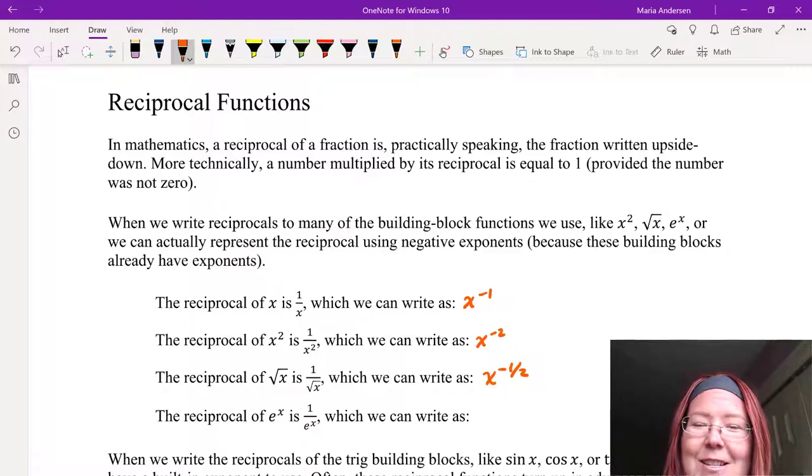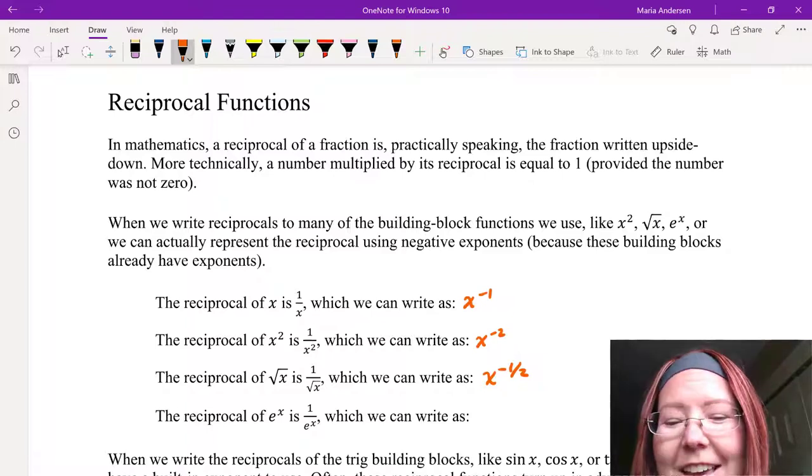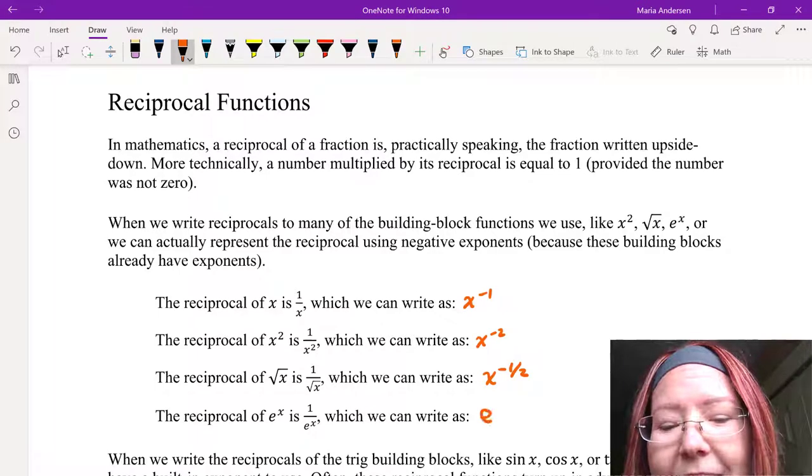The reciprocal of e to the x is 1 over e to the x, and we can rewrite that as e to the negative x.